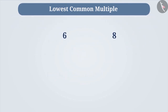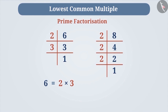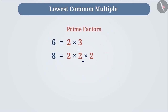Let's learn how to find the LCM of the given numbers. Let's find the LCM of 6 and 8. First, we perform the prime factorization of these two numbers. The prime factorization of 6 gives us 6 = 2 × 3. Similarly, for 8, we get the factors 2 × 2 × 2. As we can see, the factor 2 is repeated thrice and the factor 3 occurs only once. The product of these prime factors will be the LCM of the given numbers.